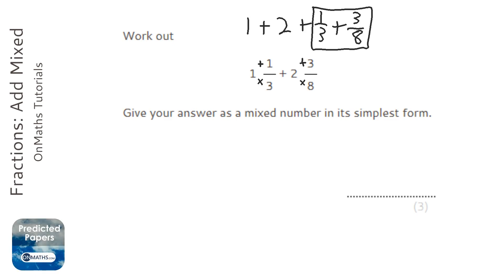So 1 times 3 is 3, add it to the top would be 4, and then keep the bottom the same. And the second fraction, 2 times 8 is 16, add it to the top would be 19 over 8.